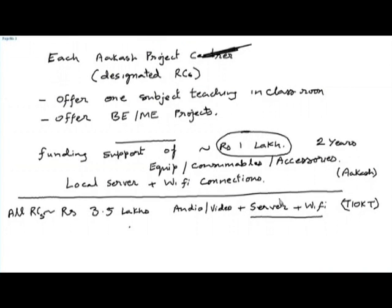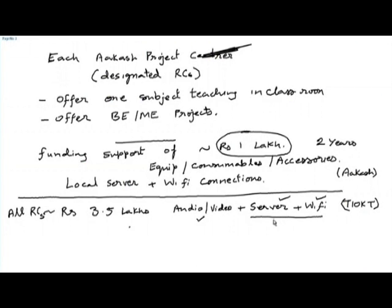For equipment procurement such as servers, Wi-Fi connectors, and audio-video equipment, we will be preparing specifications and informing you of the rates at which we can procure this equipment, as we have rate contracts with server suppliers, Wi-Fi connector suppliers, and similar suppliers. We will inform you about the pricing available in Mumbai to IIT Bombay.